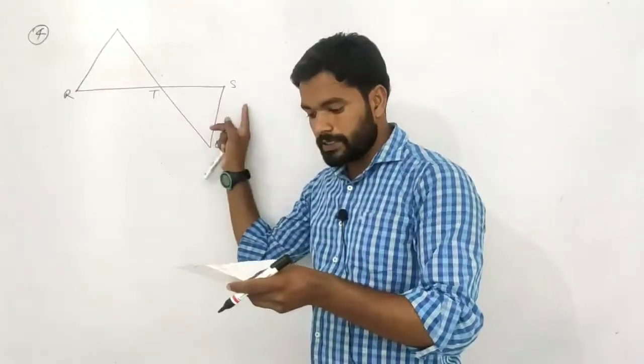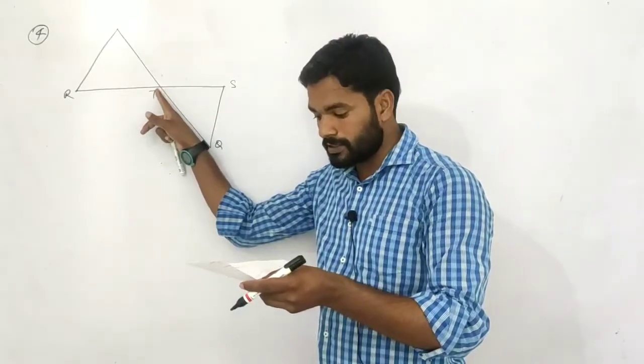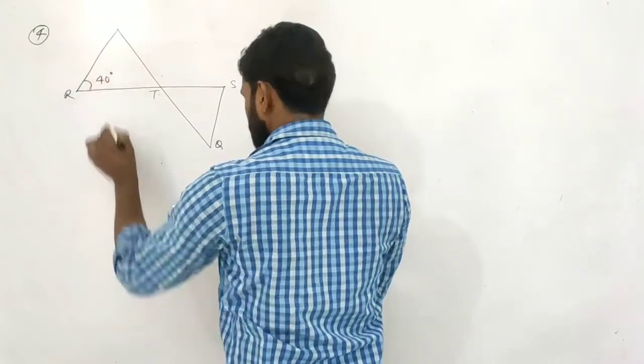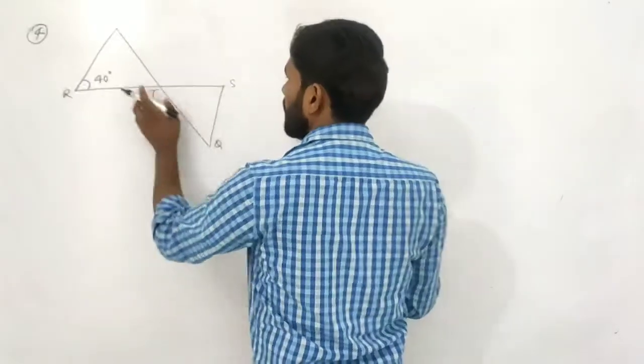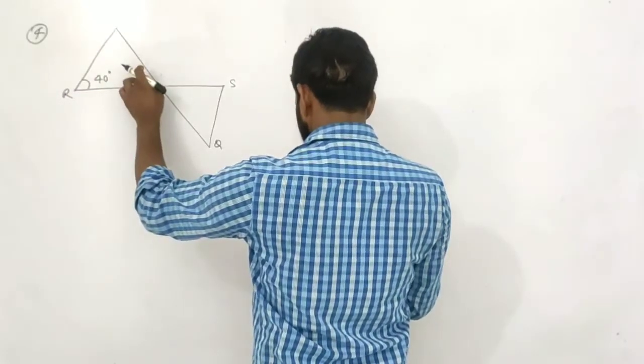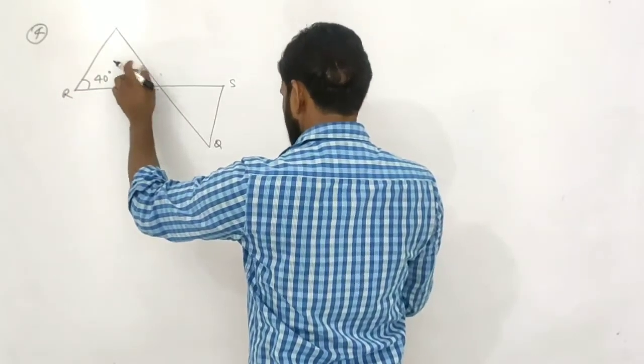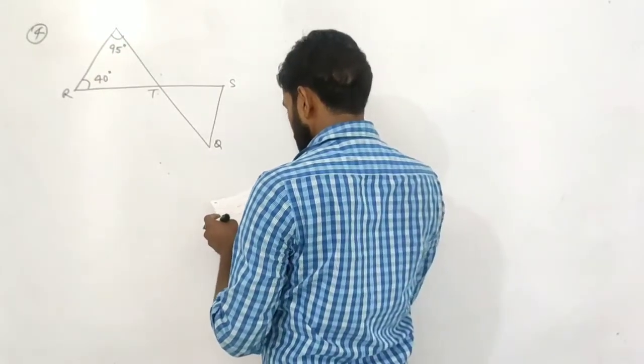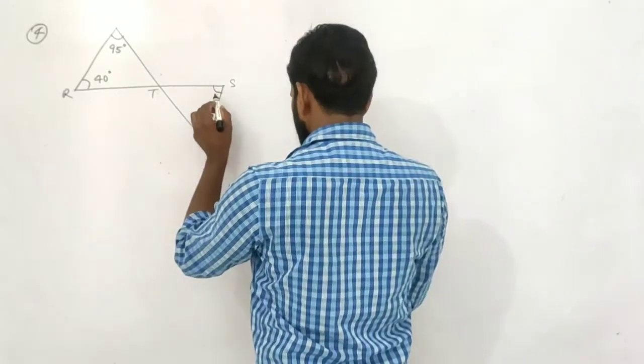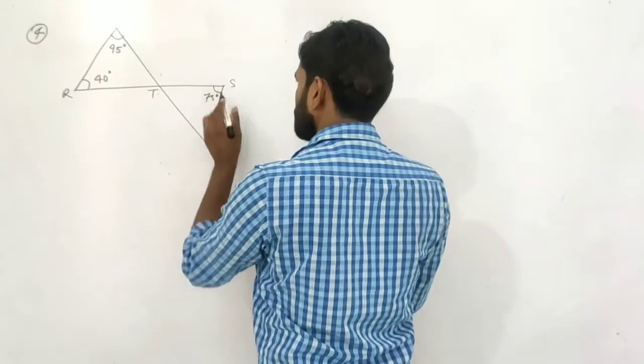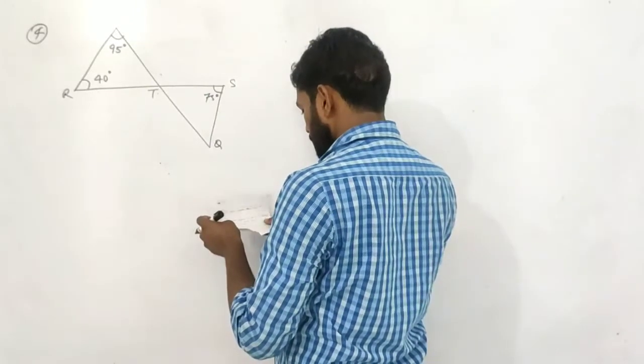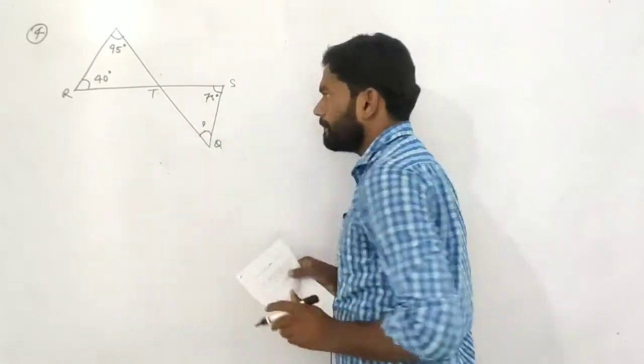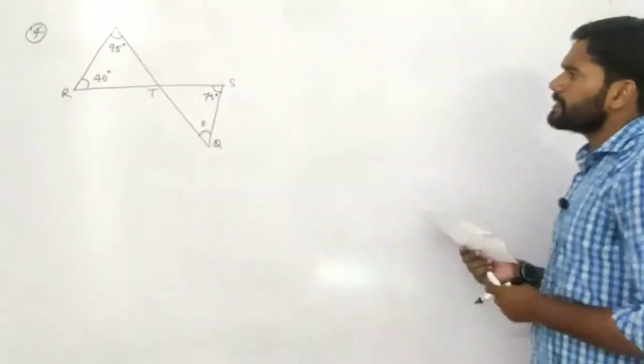PQ and RS intersecting at the point T such that angle PRT is 40 degrees, angle RPT is 95 degrees, angle TSQ is 75 degrees. And last, what is it? Angle QTS. This is how we find out.